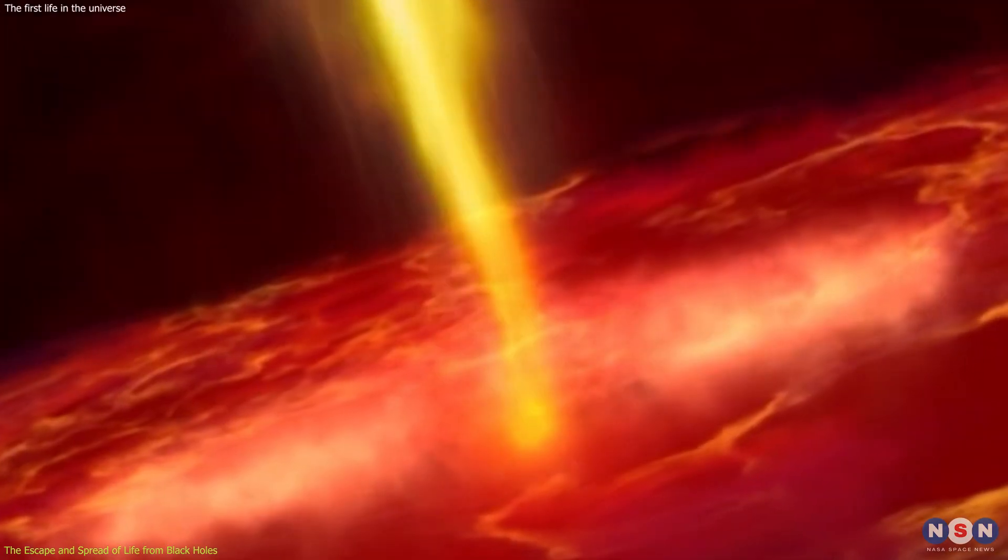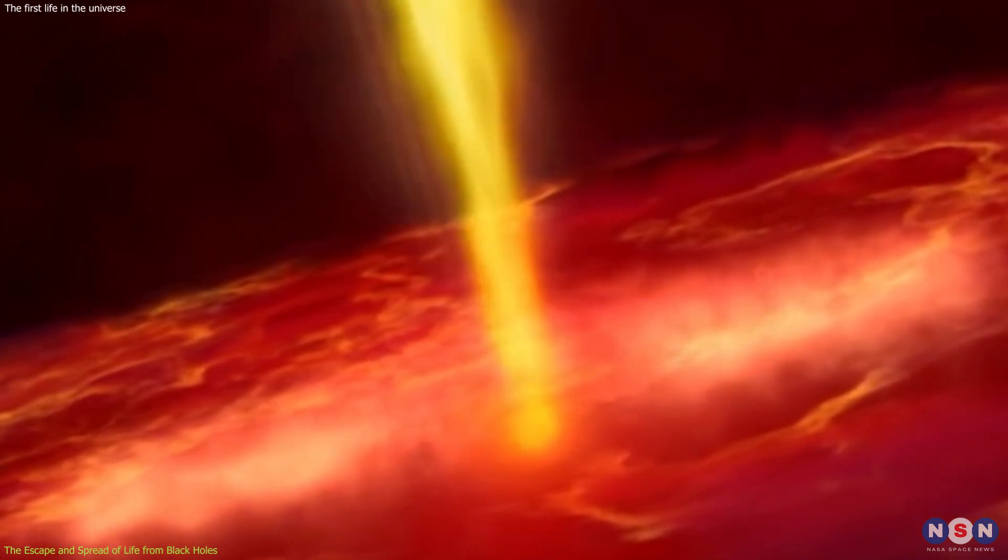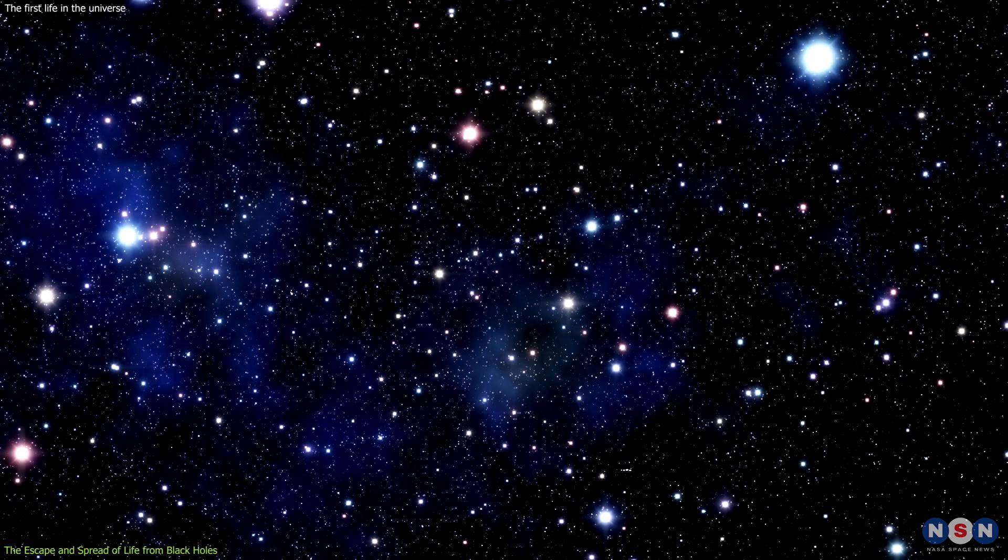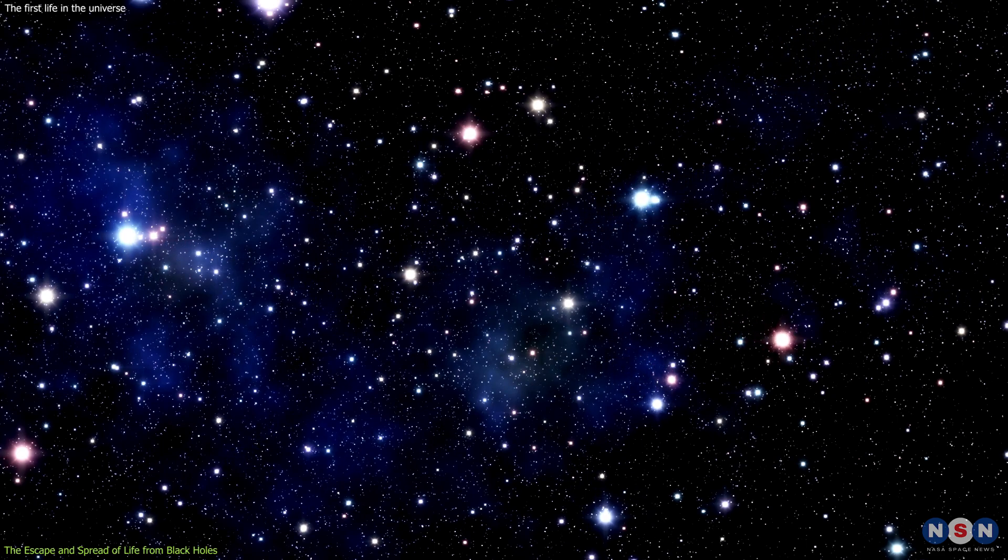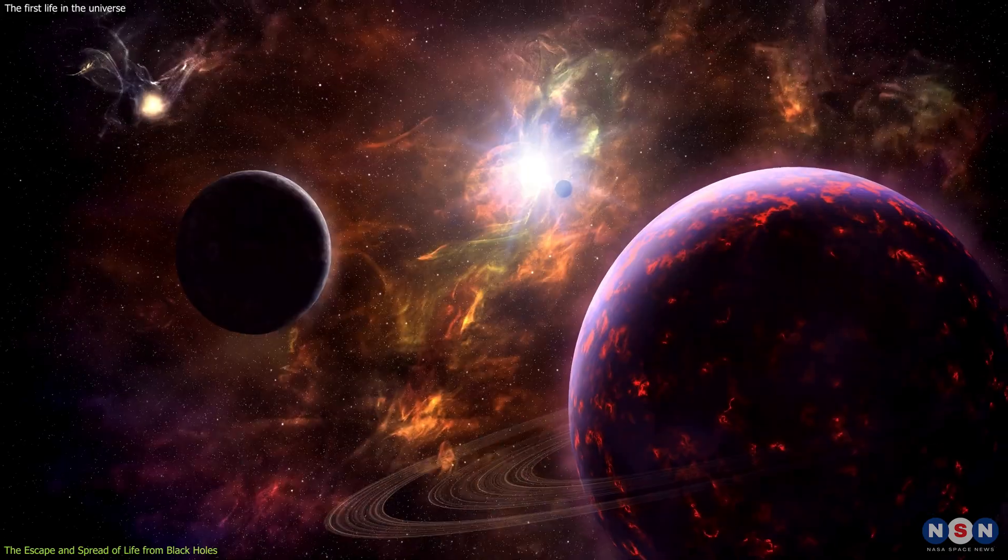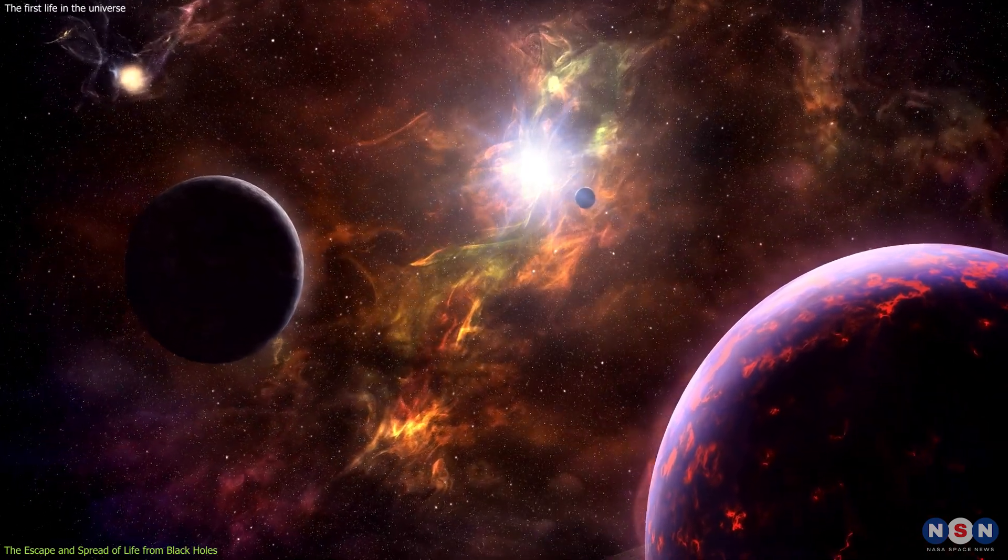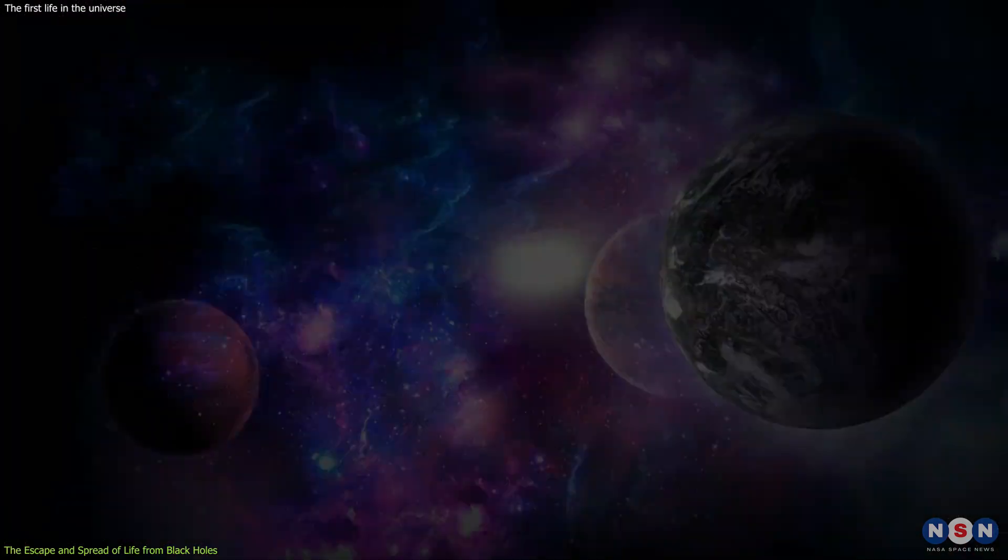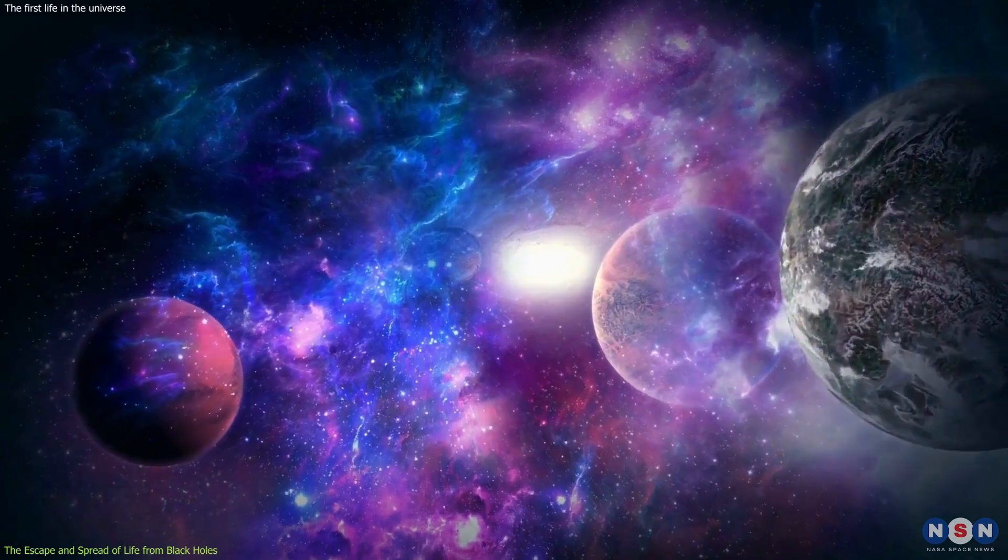They also suggested that some of the life forms could hitchhike on the particles and radiation that are emitted by the black hole and travel to other regions of the universe. Some of these life forms could colonize new environments, such as planets, moons, asteroids, or comets, and adapt to different conditions, according to the research.